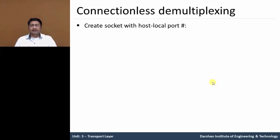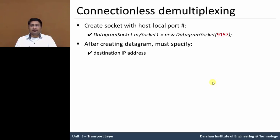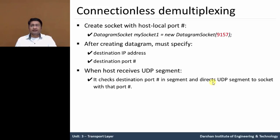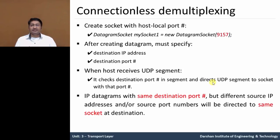In connectionless demultiplexing, we first create a socket with port 9157. After creating this socket, we need to specify the destination IP address and destination port number in which we want to send a segment. In the transport layer, when the receiving host receives a UDP segment, it checks the destination port number in that segment and directs that UDP segment to the socket with that port number for the appropriate application process. IP datagrams with the same destination port number but different source IP address or different source port number will be directed to the same socket at the receiving side.